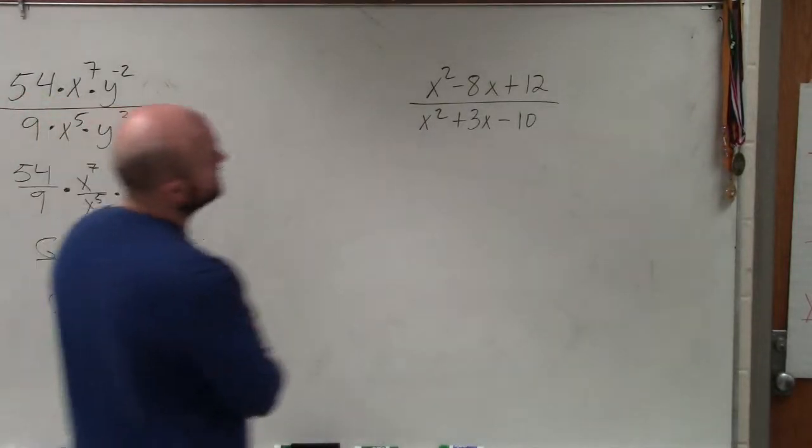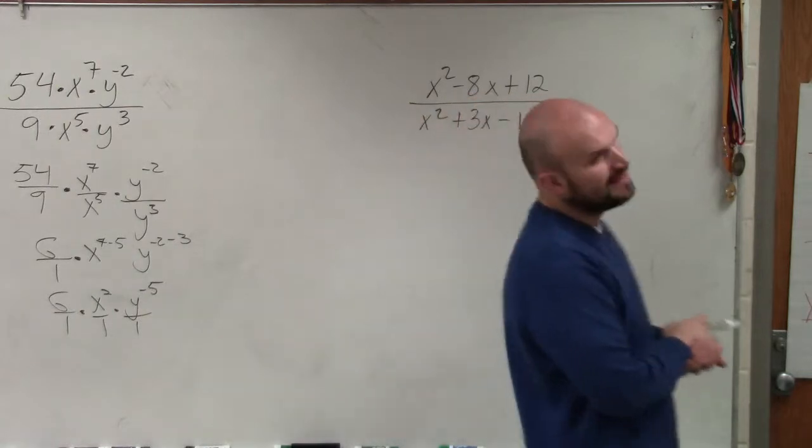So in this case, ladies and gentlemen, we have x squared minus 8x plus 12 divided by x squared plus 3x minus 10.